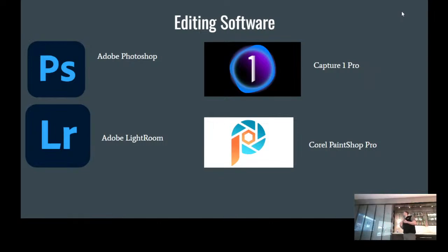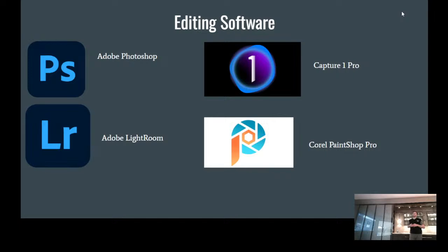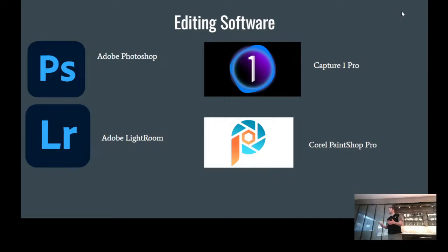When we talk about editing, a lot of people question it right off the bat. Even if you're shooting on automatic, you can edit photos using software like Photoshop, Lightroom, Capture One Pro, or Corel PaintShop Pro. I do like Adobe's products, but the downside is you pay monthly — you can't buy it outright. With Capture One Pro and Corel PaintShop Pro, you can download and pay one time, about $200 to $300, and you get it for life. Even if you're just a hobbyist, editing photos is always a good idea.